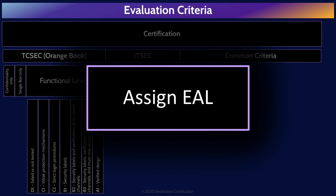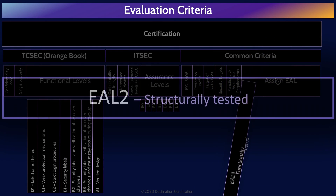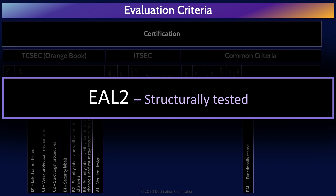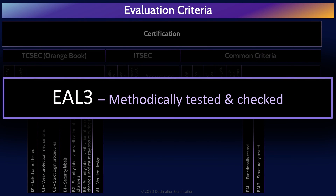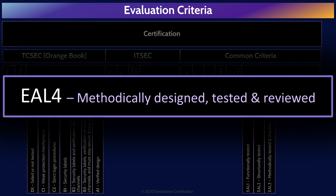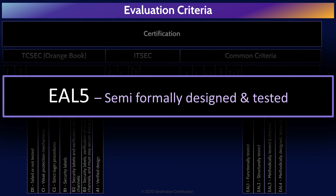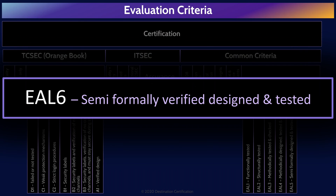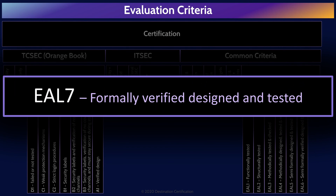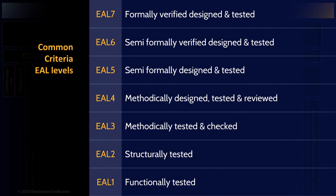The independent testing lab tests the functional and assurance aspects of the target of evaluation, and the end result is an EAL rating — an Evaluation Assurance Level rating. There are seven EAL levels. EAL1: only the functionality of the product was tested. EAL2: only the structure was tested. EAL3: methodically tested and checked. EAL4: methodically designed, tested, and reviewed. EAL5: semi-formally designed and tested. EAL6: semi-formally verified, designed, and tested. EAL7: formally verified and designed — the best possible rating. I highly recommend you memorize these EAL levels and their order.